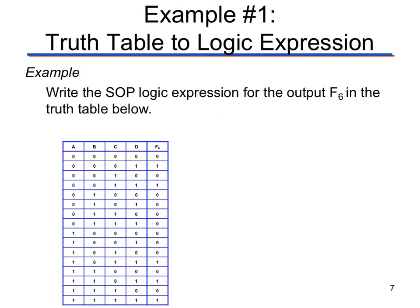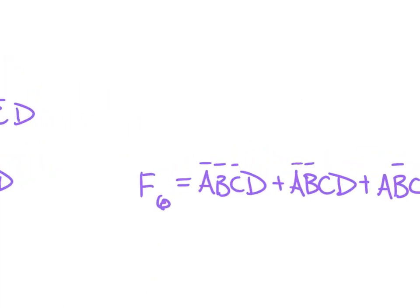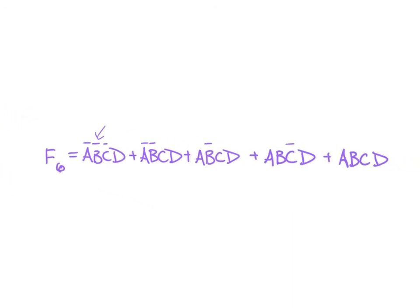We have another example here. I'd like you to pause the video, see what you come up with, and see if it matches. Here's the answer you should have gotten — the min terms are written down the side, and then the total SOP expression. One thing to note: those bars across the top have to remain separate. If they become one solid bar, that becomes a different statement. There's a difference between NOT A and NOT B and NOT C versus having a solid bar over the entire expression A AND B AND C. Make sure you break those apart — we talk about that more later when we get into solving Boolean expressions.